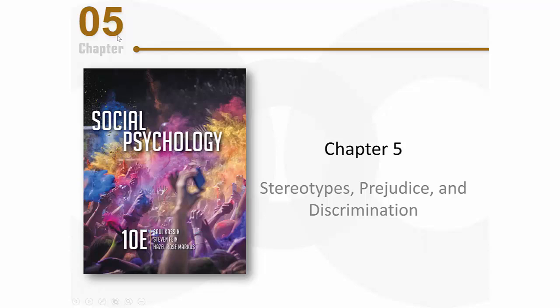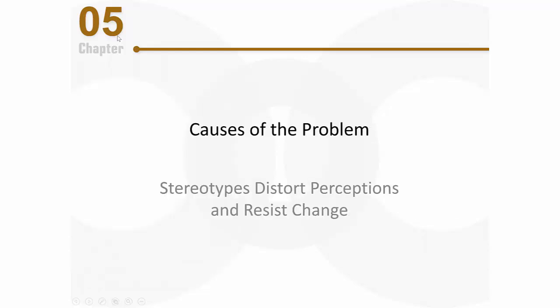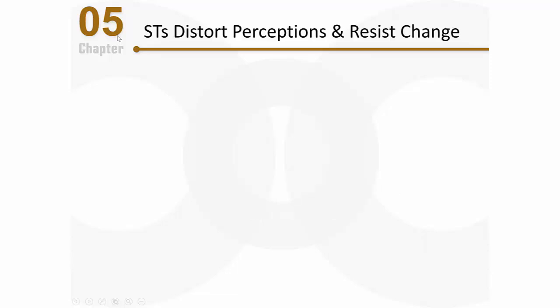Let's continue talking about stereotypes, prejudice, and discrimination. As we finish up talking about some causes of these problems, let's focus on how stereotypes distort perceptions and resist change. Although some stereotypes might be at least somewhat accurate, many are blatantly false and many others are vast oversimplifications. That leads us to another cause of stereotyping, prejudice, and discrimination: stereotypes often distort our perceptions and resist change even when they're clearly false.